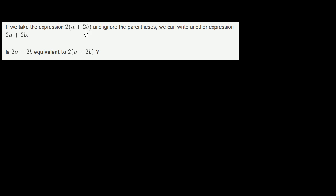You have to distribute that 2. This is going to be equal to 2 times a plus 2 times 2b, which is equal to 2a plus 4b. So you can't just ignore that there. 2a plus 4b is very different than 2a plus 2b. So are these two things equivalent? No. No, this is seriously irresponsible mathematics.